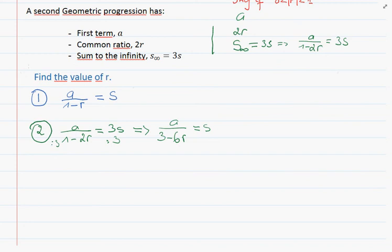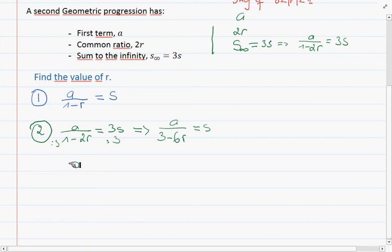Now as you can see we're having s equal to s, so we're going to put it all together and use a divided by 1 minus r equals to a divided by 3 minus 6r.